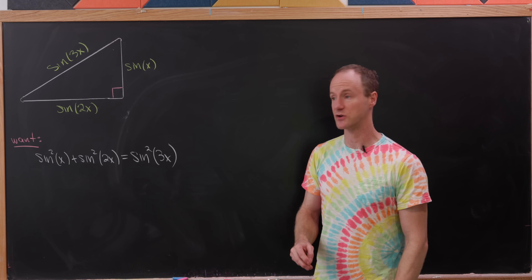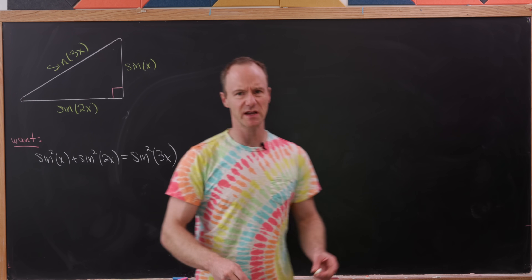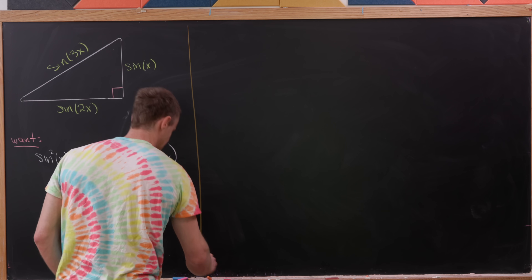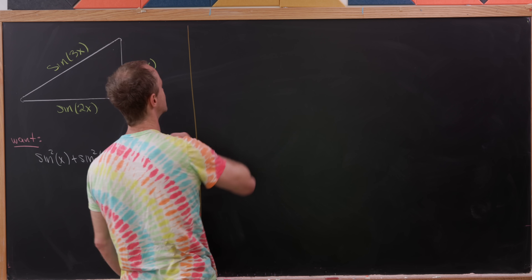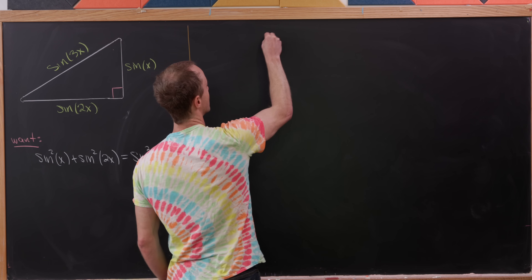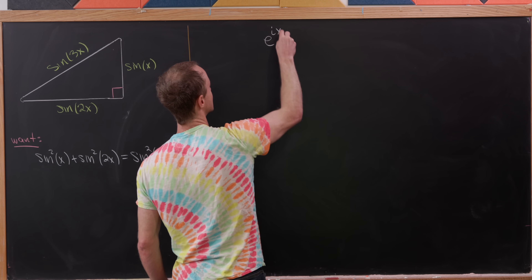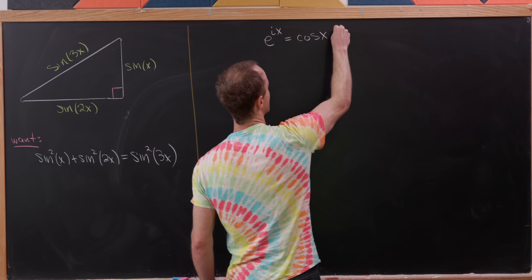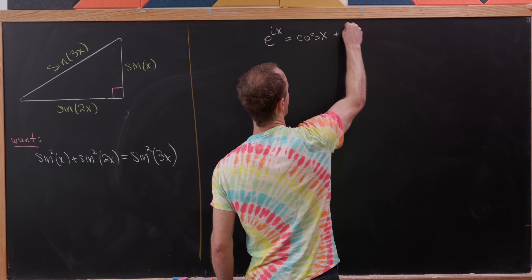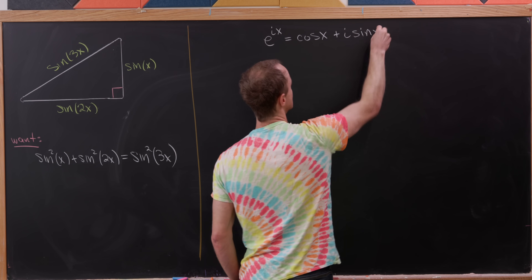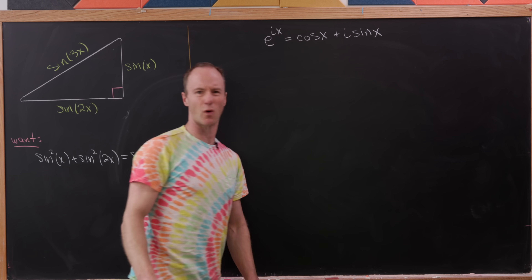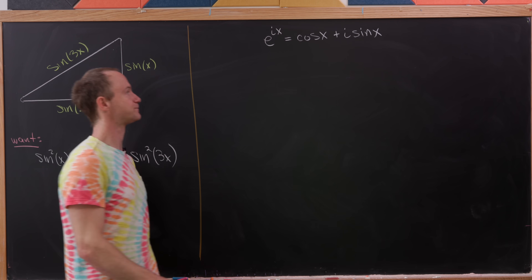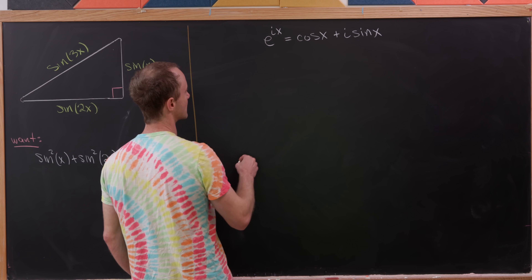Let's derive both the double and triple angle formulas using a bit of complex arithmetic. Recall that e to the ix is the same thing as cosine x plus i sine x. This is Euler's formula for the complex exponential.